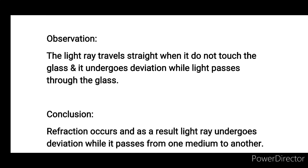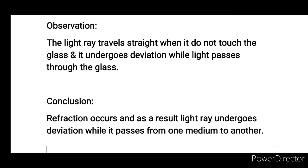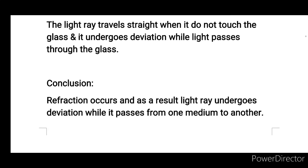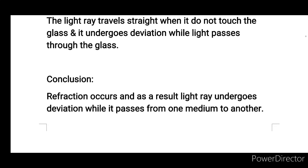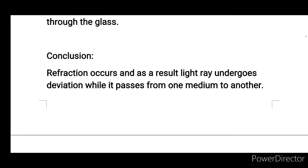Observation: The light ray travels in a straight line when it does not touch the glass, and it undergoes deviation while light passes through the glass. Conclusion: Refraction occurs, and a light ray undergoes deviation while it passes from one medium to another.